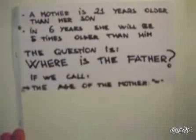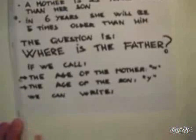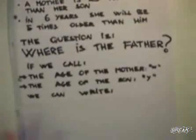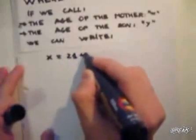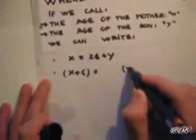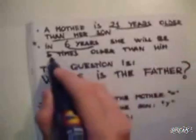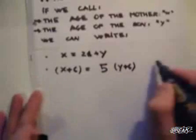If we call the age of the mother X and the age of the son Y, we can write X equals 21 plus Y, because the mother is 21 years older than the son. And since in six years the ages will be increased by six, and she will be five times older than him, we can write X plus 6 equals 5 times Y plus 6.